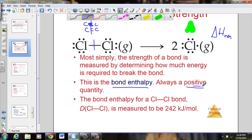It is always a positive value since it always takes energy to force a bond to break. The bond enthalpy, for instance, for a Cl–Cl bond, Cl molecular chlorine, the change in energy is 242 kilojoules per mole. The bond energy here, positive 242 kilojoules per mole. Notice it's positive. To break a bond is always positive.